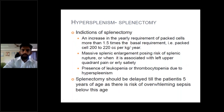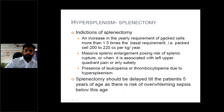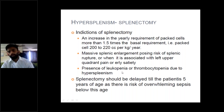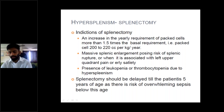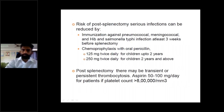An important complication of thalassemia is hypersplenism, which may require splenectomy. Indications for splenectomy are: an increase in yearly packed cell requirement more than 1.5 times the basic requirement (i.e., packed cells up to 200–220 cc/kg/year); massive splenic enlargement posing risk of splenic rupture or associated with left upper quadrant pain or early satiety; and the presence of leukopenia or thrombocytopenia due to hypersplenism. Splenectomy should be delayed until the patient is at least 5 years of age due to the risk of overwhelming sepsis. Before splenectomy, pneumococcal vaccine, meningococcal vaccine, and other conjugate vaccines should be given. Risk of post-splenectomy serious infections can be reduced by immunization against pneumococcal, meningococcal, Haemophilus influenzae B, and Salmonella typhi at least 3 weeks before splenectomy.